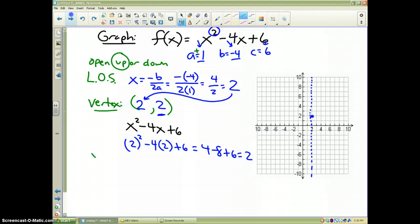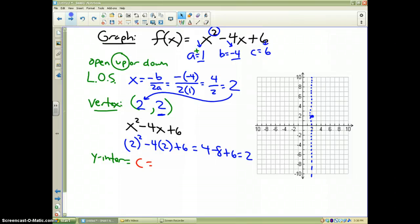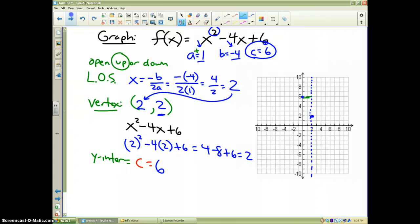Next, the y-intercept. From the prior slide, I told you the y-intercept is the c value. Well, in this case, c is 6. So therefore, on my y-axis, I plot a dot at 6. Now, since that dot lies 2 off the line, I go 2 to the other side of the line of symmetry. And that's my third point of my graph.